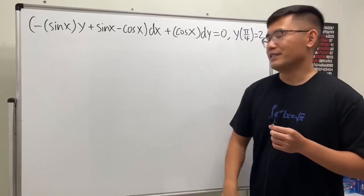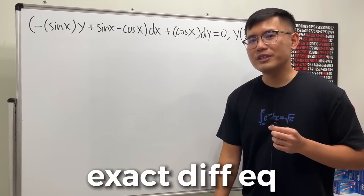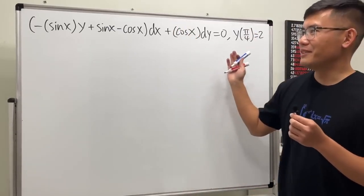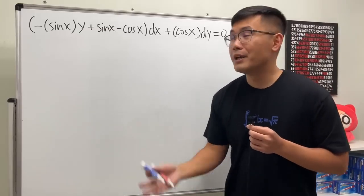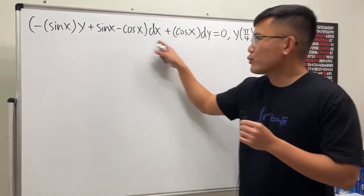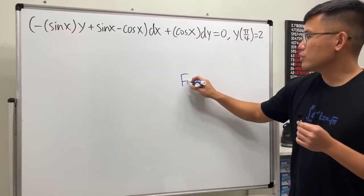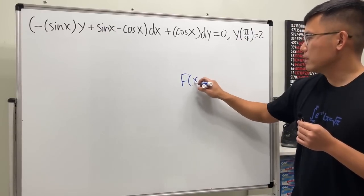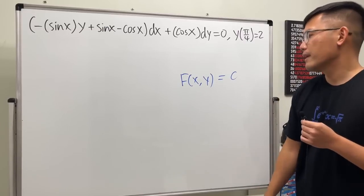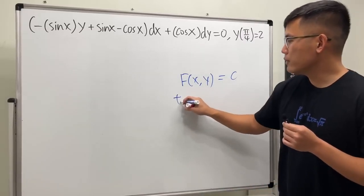This is an exact differential equation. This form is actually from the total differential of some function with two variables — let's call it capital F of x comma y — and let's say this is equal to some constant c. When we have this, we can do the so-called total differential.